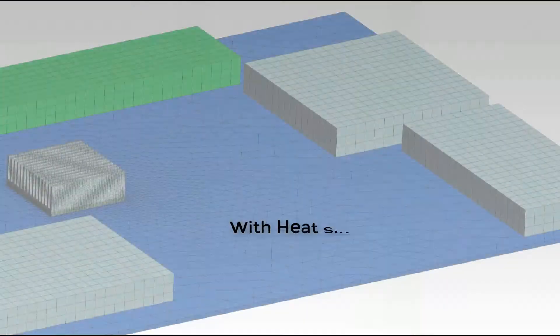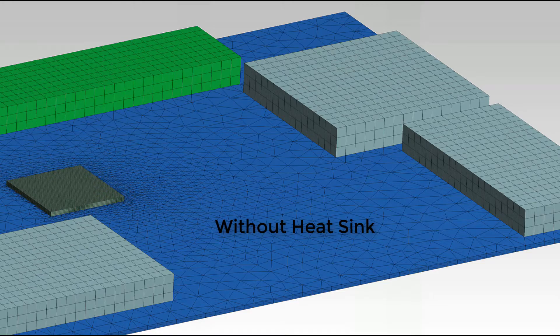With these boundary conditions, we'll solve the case for two scenarios, one with a heat sink and second without a heat sink. For the second case, we'll suppress the heat sink body from the geometry. The rest of the boundary conditions will remain the same in both scenarios.